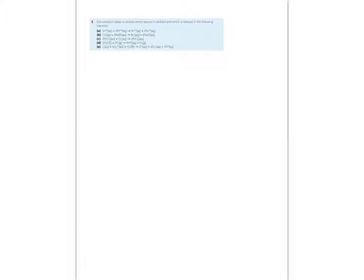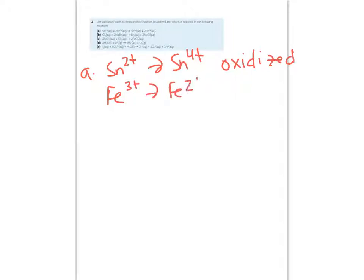Question number 2 says, use oxidation states to deduce which species is oxidized and which is reduced in the following. So in A, I see that I have Sn2 plus on the left, and I can see on the right, it becomes Sn4 plus. So when the oxidation number goes up, that lets me know it's losing electrons, or in other words, it's oxidized. My other ion there is Fe3 plus, and it's going from a 3 plus to an Fe2 plus, which lets me know it's being reduced.